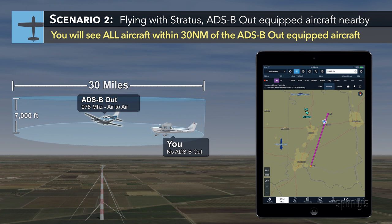If you are close enough to that airplane, your Stratus can listen in on that traffic message. While you won't get a complete traffic picture, you will get a better one since the ground station transmits mode C targets in addition to ADS-B targets.